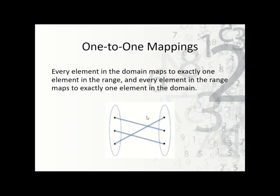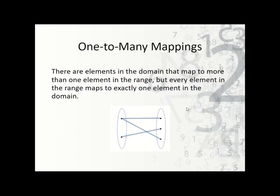One-to-one mappings mean that for every element in the domain it maps to exactly one in the range, and it also works in the other direction — for everyone in the range there's exactly one in the domain that maps to it. Here we can see this one maps to this one and this one maps to this one — neither maps to two different places. That's one-to-one mapping. One-to-many means there's an element in the domain mapping to multiple places in the range. For instance, this one maps here and here — so even though all other elements are fine, if even one goes to multiple places it becomes a one-to-many mapping.